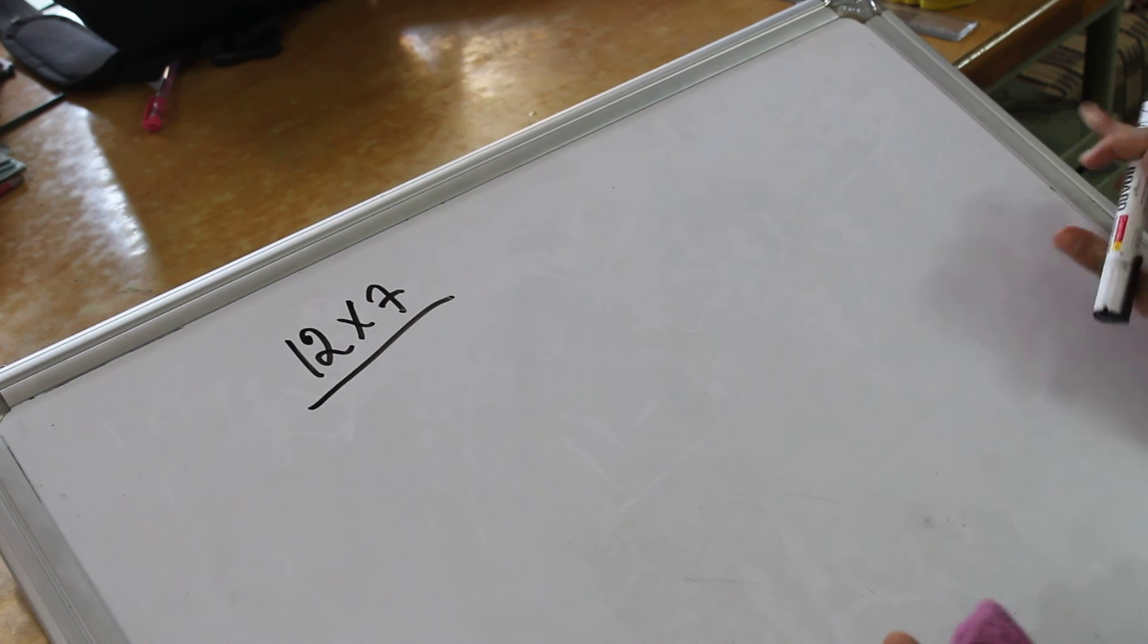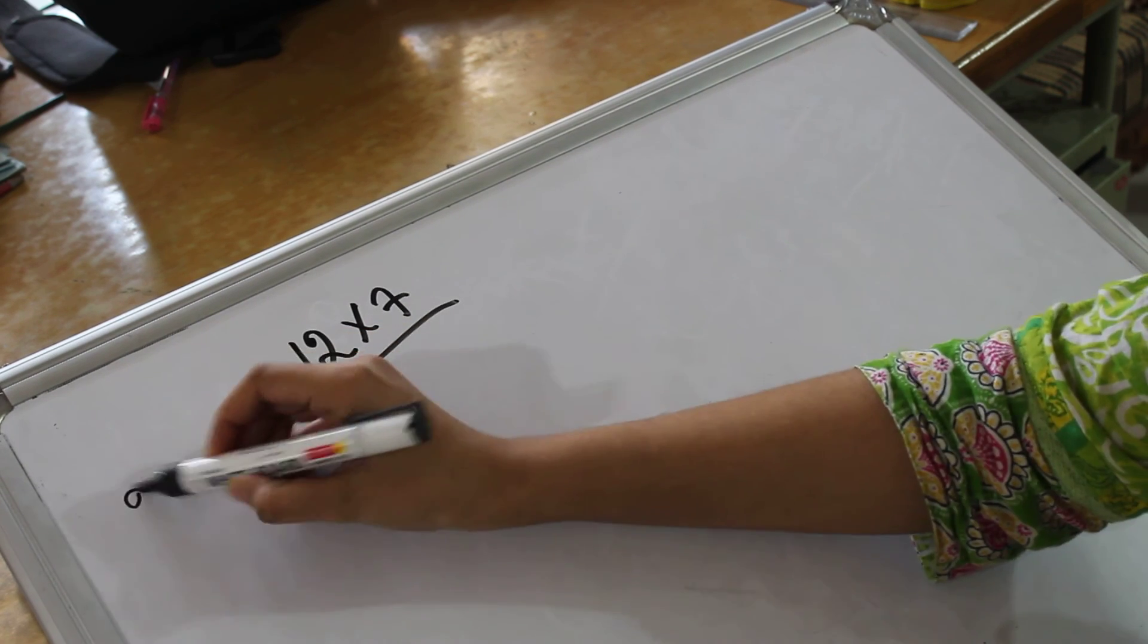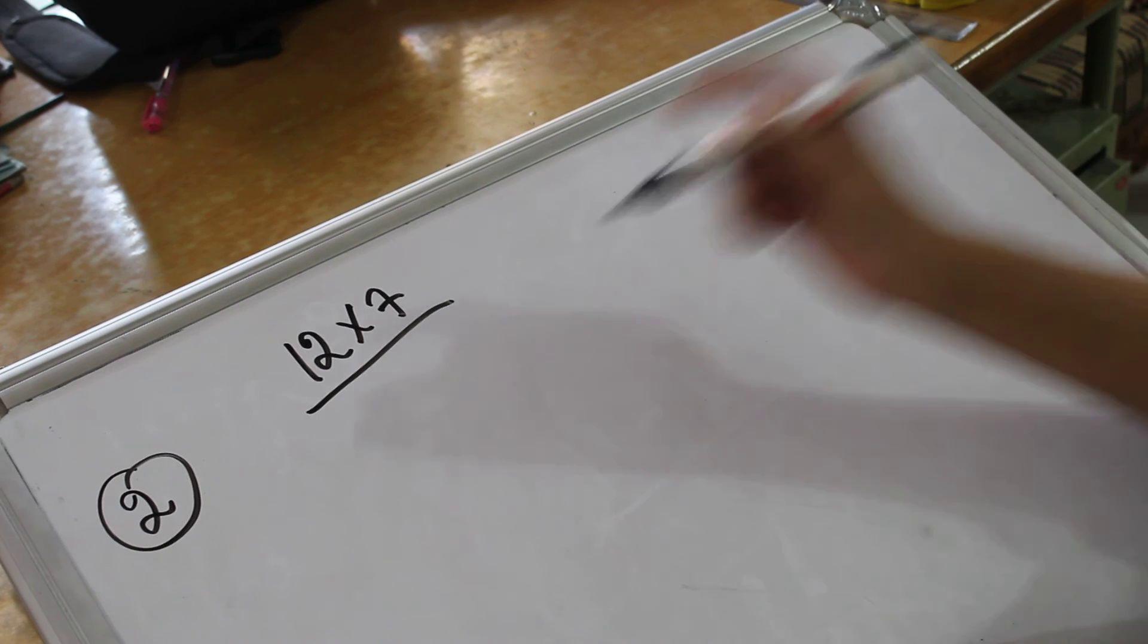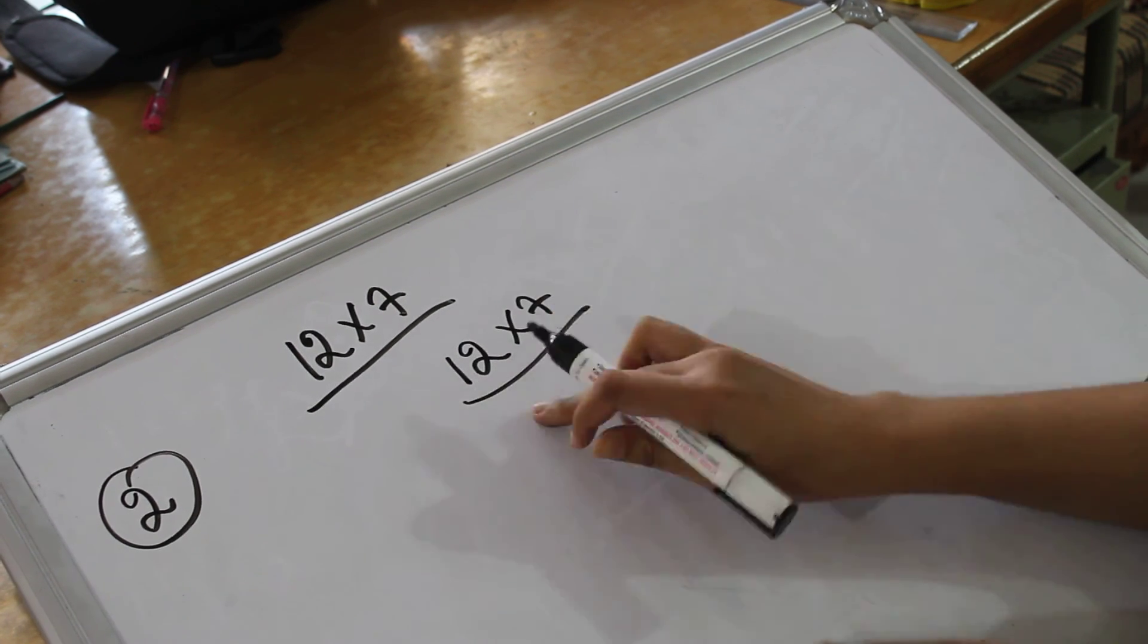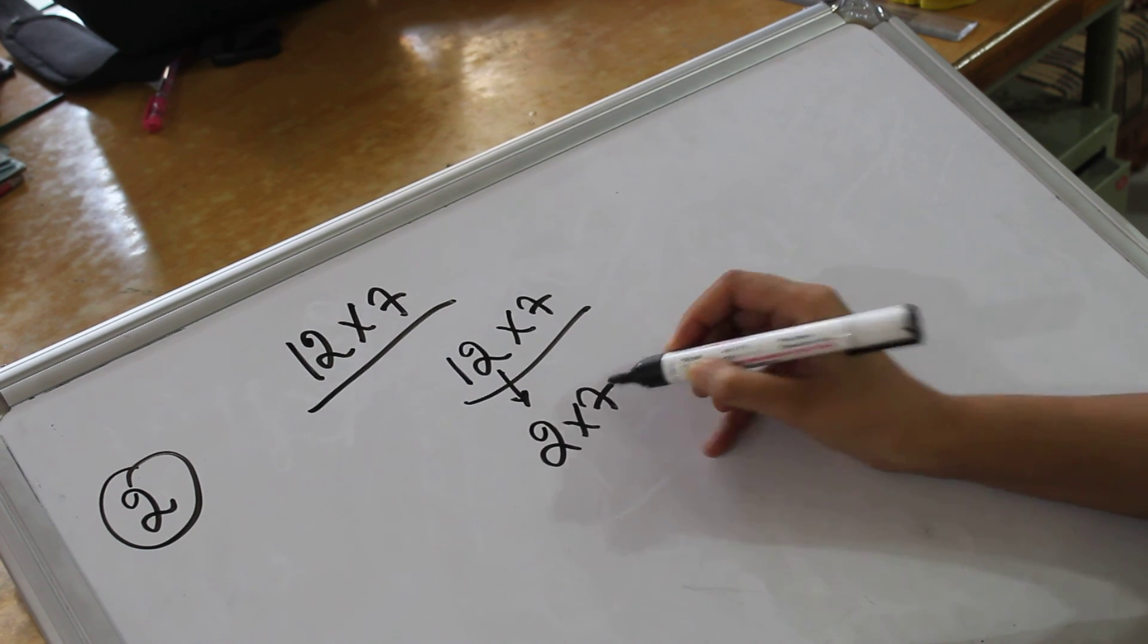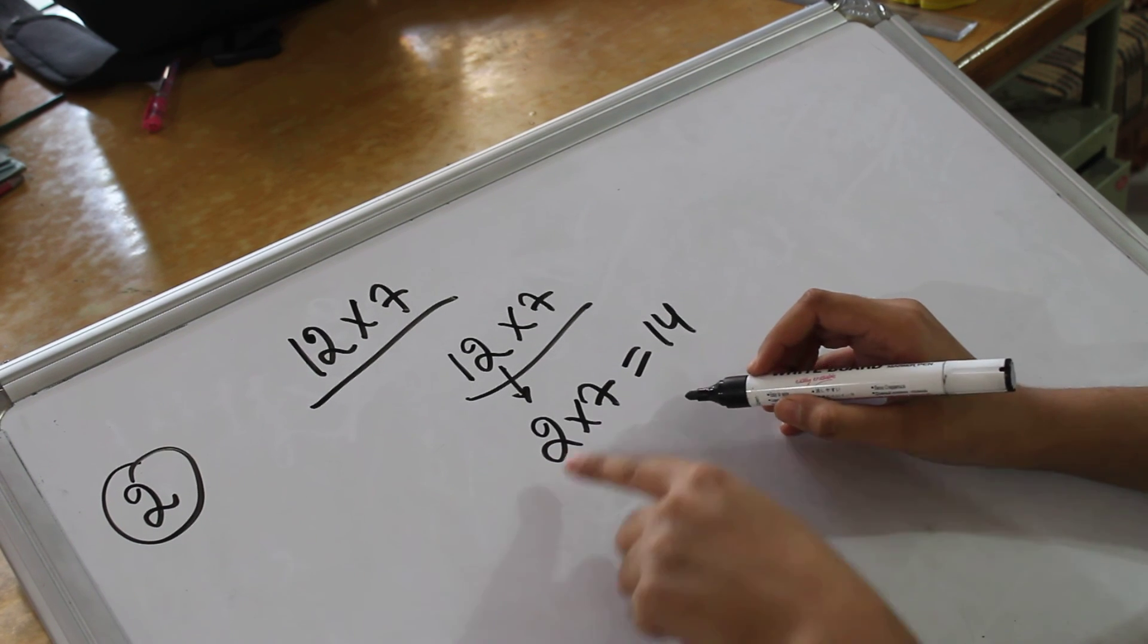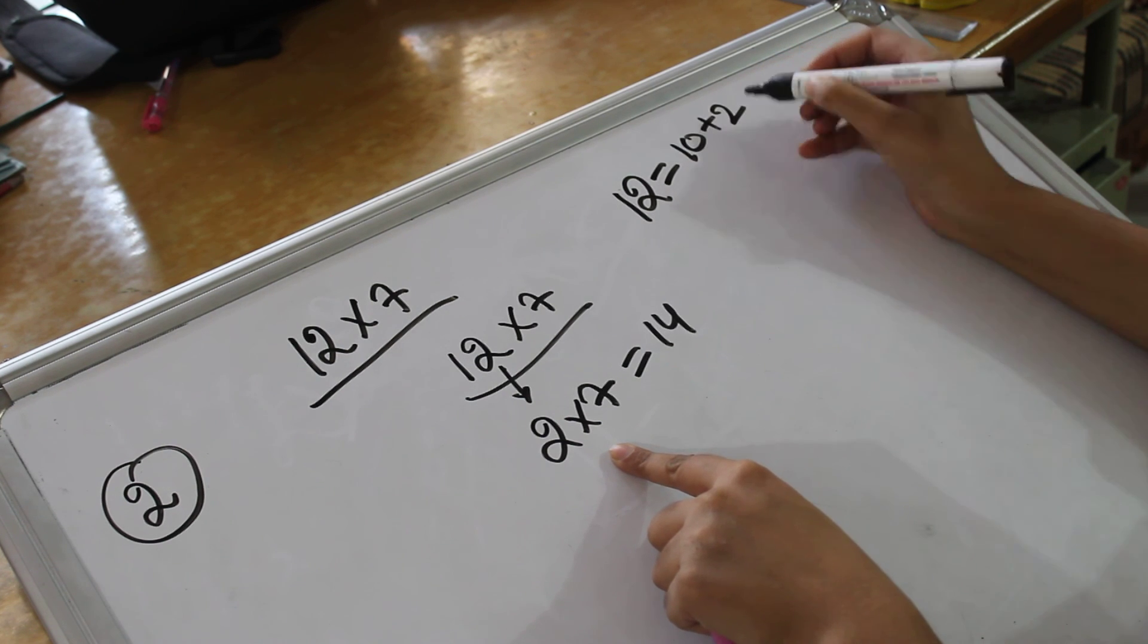So 12 into 7. It might seem difficult to predict for those who do not know the table of 12. But if you know the table of 2, you can do this one. How? Let me teach you. Now 12 into 7, if I take this value that is 2 and I do 2 into 7, I'll get 14.